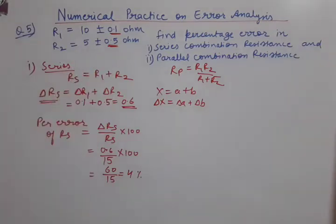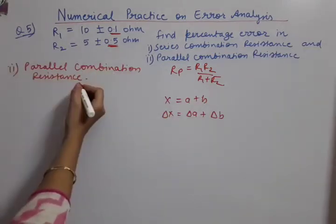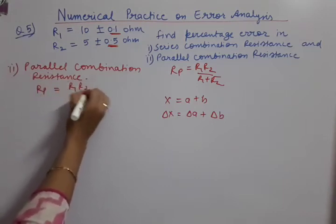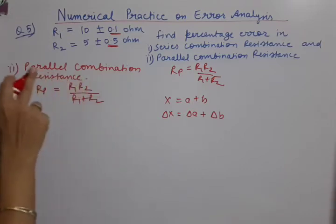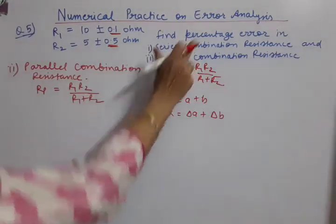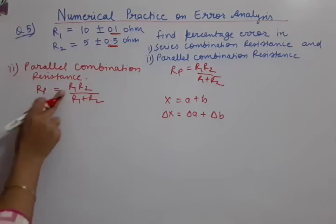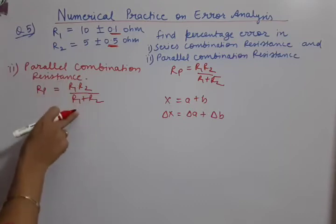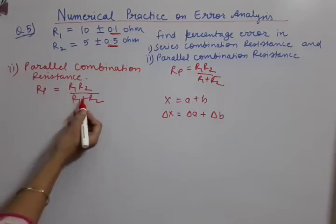Then I am starting the parallel combination resistance. So parallel combination resistance, that means we will call it Rp. Rp formula, R1 R2 upon R1 plus R2. This we use in the circuits to solve the parallel combination of any two resistances. Now we have made the formula in which we have to find the percentage error. First of all, we have to identify that operation is what? So here it is the mixed operation case. Multiplication is also there. Division is also there. And addition is also there.